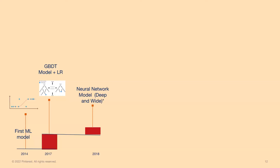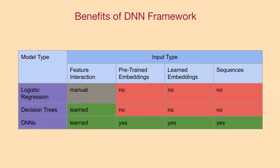Around 2017, neural networks became the go-to choice, and Pinterest started investing in moving the stack from GBDTs to more neural network-based approaches. Neural networks can also learn nonlinear interactions, but in terms of different kinds of features you can input, they are much more powerful than GBDTs and logistic regression stacks. Neural networks also support utilizing pre-trained embeddings or learning embeddings as part of the model architecture, which is a very powerful paradigm shift in recommendation models.